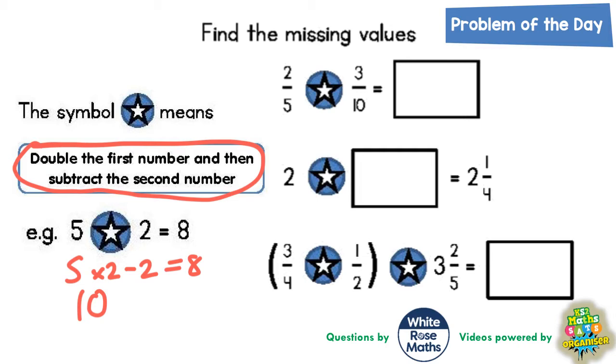Let's write this onto the fraction questions. The first one is going to be times 2 and then take away the second number which is 3 tenths. Times 2 take away 3 tenths.